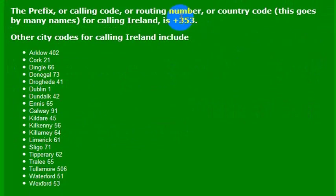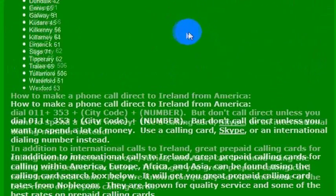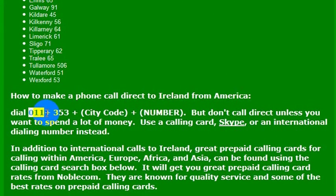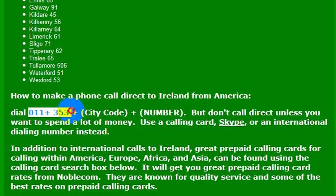What I would like to do is call internationally. Calling from the United States, I need to dial 011, which is the international dialing code, and then 353, which is the country code for Ireland. Again, 011 and then 353 to reach Ireland.